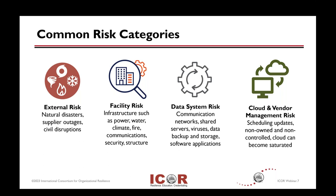Let's look at the common risk categories — the usual suspects. Most of you are probably familiar with external risks: natural disasters, man-made disasters, supply chain issues, or civil disruptions. Then there's traditional facilities risk: infrastructure, power, cooling in a critical environment, communications, physical and cyber security. The third aspect is data system risk: communications and networks, shared servers whether on-premises, hybrid, or in the cloud, and bad actors — viruses, malware, ransomware.